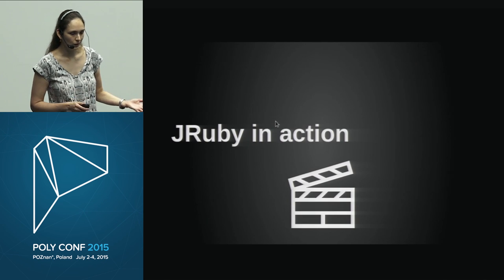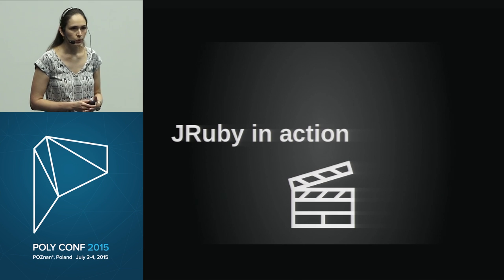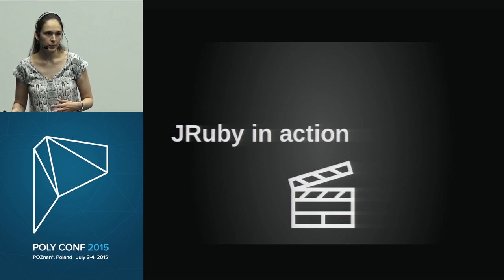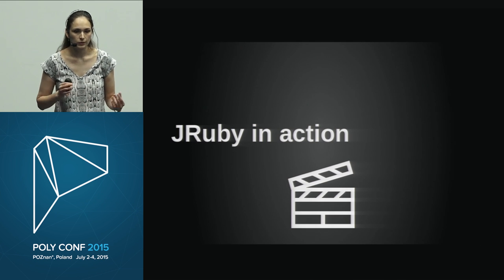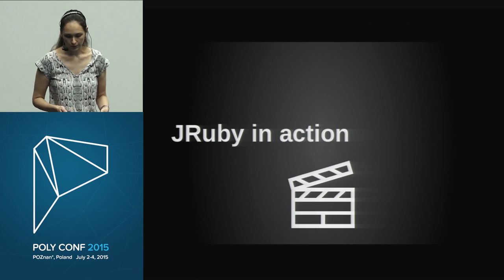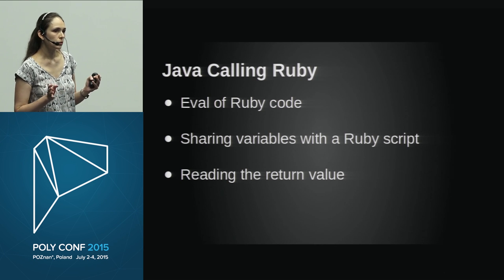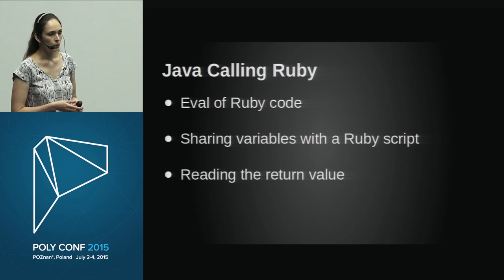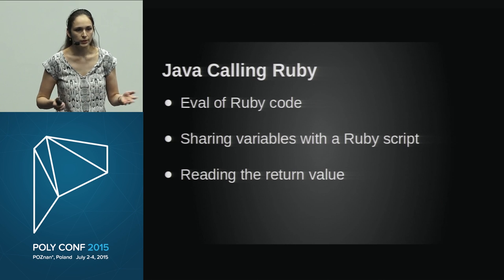Now let's check how it works. I'm going to go through three use cases: Java calling Ruby code, Ruby calling Java code, and specifics for Ruby on Rails. For Java calling Ruby, you can call either inline or from a file. You can share variables or send parameters to a Ruby script from Java, and then get the response back and process or print it.